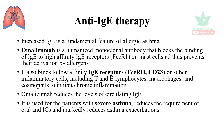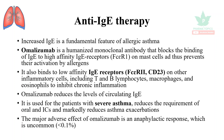Omalizumab is used for patients with severe asthma. It reduces the requirement of oral and inhalation corticosteroids and markedly reduces asthma exacerbations. The major adverse effect of omalizumab is an anaphylactic response, which is uncommon at less than 0.1%.